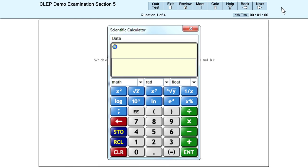The Scientific Calculator will be available in the College Mathematics, College Algebra, and Chemistry CLEP exams. To access the Scientific Calculator, click on the Calc tool on the Testing Tools menu bar. To hide the calculator, click again on the Calc tool. Note that the X sign is not functional.